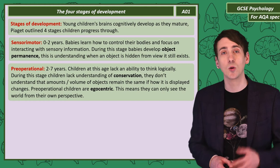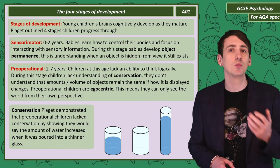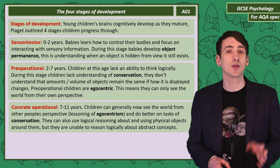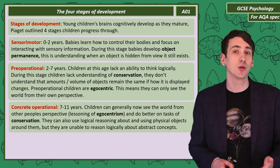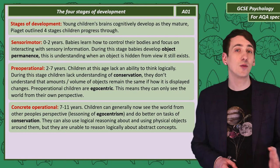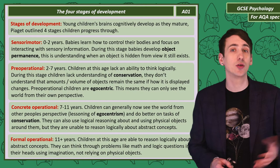Piaget demonstrated young children's inability to conserve using glasses of water. When water was poured from a wide glass into a thinner glass, children would say there was more water in the thinner glass. The third stage is concrete operational, and children at this stage are from 7 to 11 years old. Egocentrism is lessened, meaning they can now see the world from others' perspectives. Children can also do better on tasks of conservation and can start to use logical thinking about physical objects around them, but they struggle thinking logically about abstract concepts. The final stage, formal operational, at 11 years and older — children should now be able to use logical reasoning about abstract concepts, working out mathematical and logic questions in their heads.